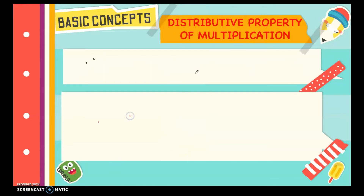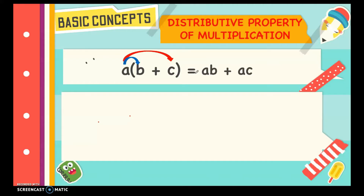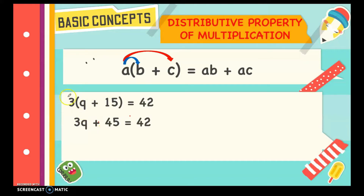The last property we will discuss is the Distributive Property of Multiplication. If we have a multiplied by the sum of b and c, we distribute a to each term inside the parenthesis, and it becomes a times b plus a times c. Example: 3 multiplied by the sum of q and 15 is equal to 42. Let's distribute 3 to each term inside the parenthesis: we get 3q plus 3 times 15, which is 45, is equal to 42. Since we want only the variable on the left side, we must remove the other numbers.